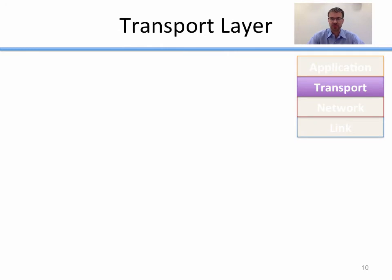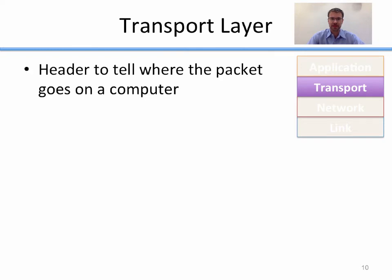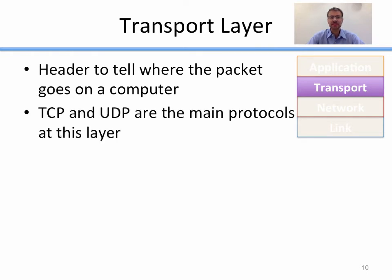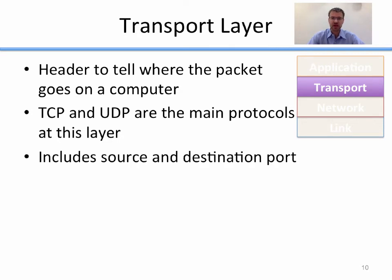After the network layer comes the transport layer. The transport layer is used to dictate exactly how data is sent between applications. It's a header to tell the packet where it goes on a specific computer and a bit more about how it's transported. TCP and UDP are the main protocols used at this layer; ICMP is another one. The transport layer typically includes the source and destination port of where the packet needs to go.